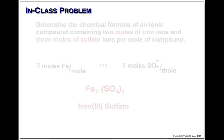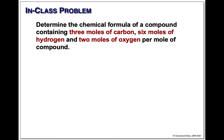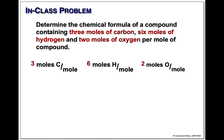Let's do one more simple one: three moles of carbon, six moles of hydrogen, two moles of oxygen. Start with CHO. We have three carbons, six hydrogens, two oxygens — so the formula is C3H6O2.